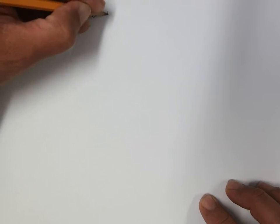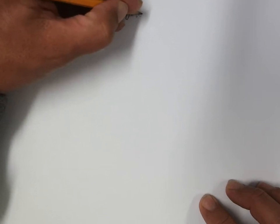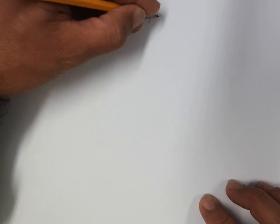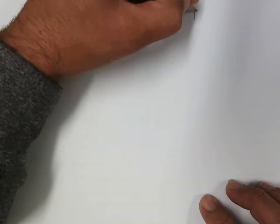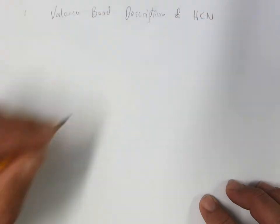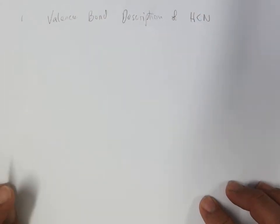This first question asked for a valence bond description of HCN. So the first thing I need is a Lewis structure.